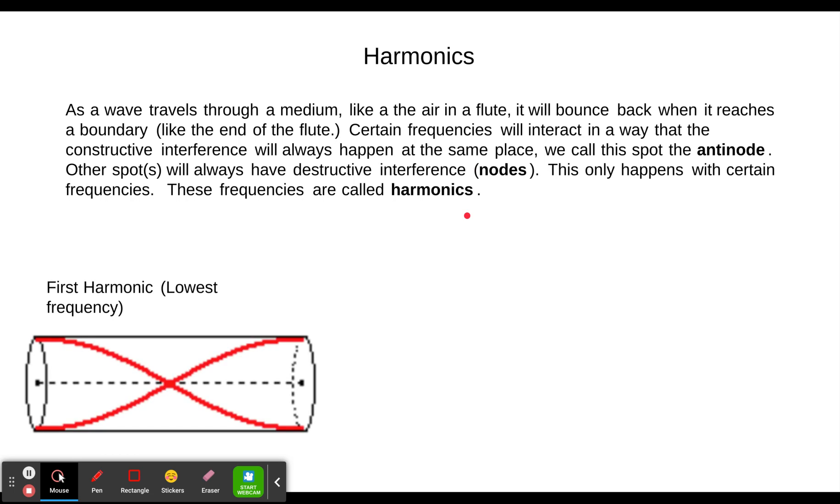So we see our first harmonic, which is our lowest frequency, is a little different with the string. Remember it started a node, went to an anti-node, and came back to a node. Here we have an anti-node at the end because it's going from enclosed air to open air. It reflects back off the end erect instead of inverted, and so we get an anti-node here at the end. We get a node in the middle and another anti-node at the other end since the same thing is happening there.